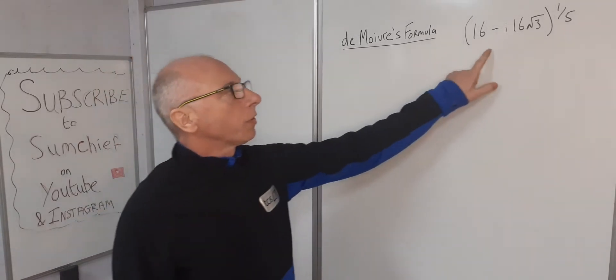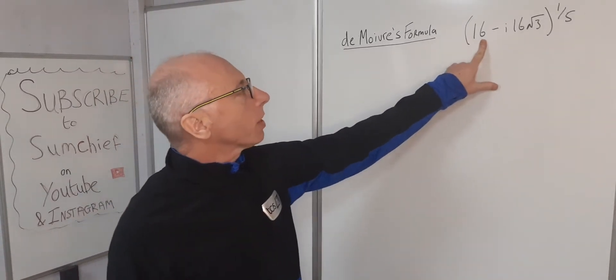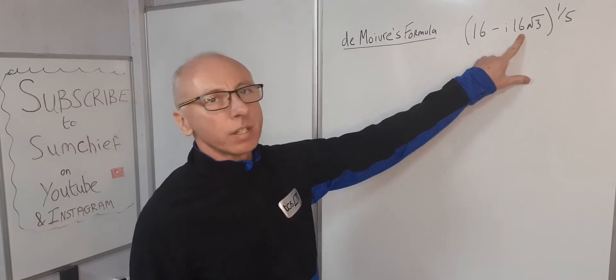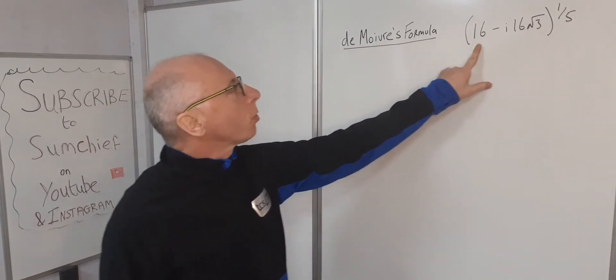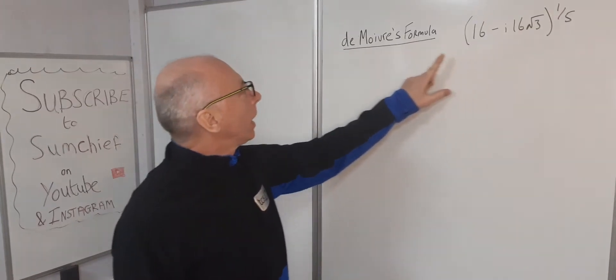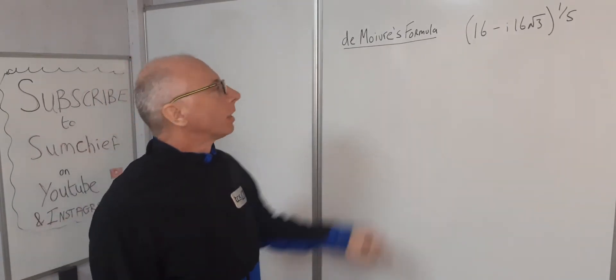In this video we're going to find the fifth roots of 16 minus i·16√3 — a complex number — using De Moivre's formula.